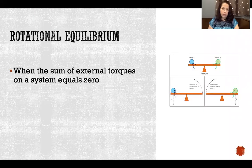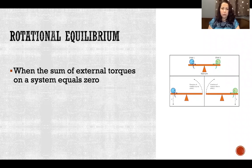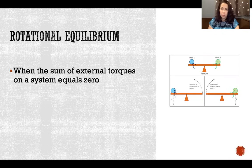Rotational equilibrium is when the sum of external torques on a system equals zero. Torque is the tendency of a force to cause rotation around an axis. When we look at all of the forces causing torque on that system or at that axis of rotation and add them all up, do they equal zero? Do we have opposing torques that cancel each other out, just like in the previous example?